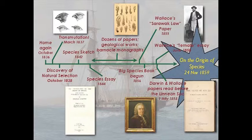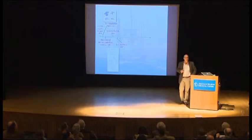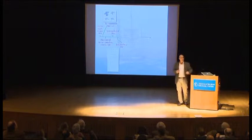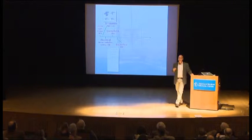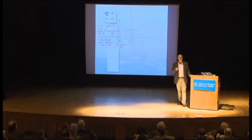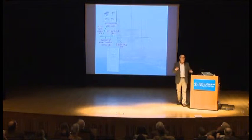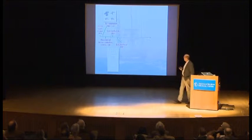A few years later he ventures a sketch — 1842, then 1844, a very long exposition. This 1844 species essay is really a miniature version of the Origin of Species. Many of the chapter headings are the same. He had it figured out in broad strokes even at that time.